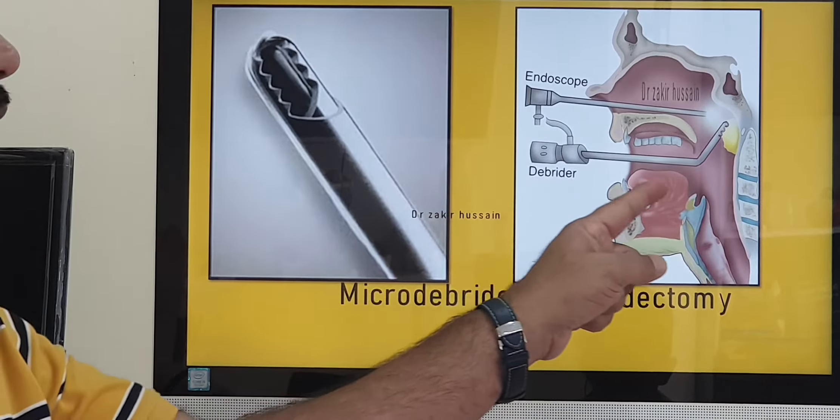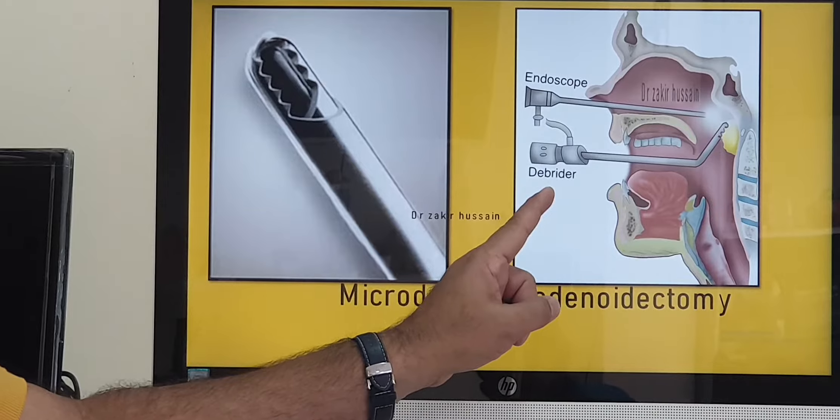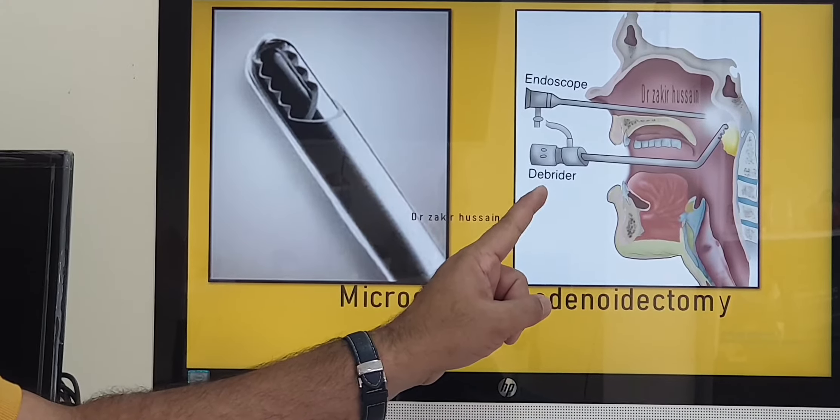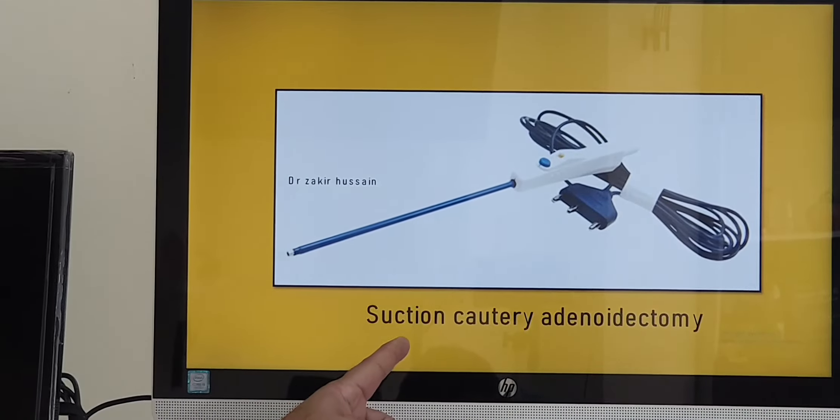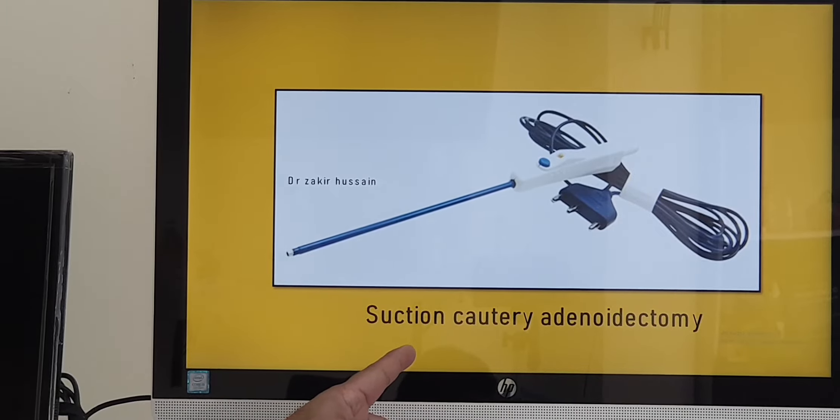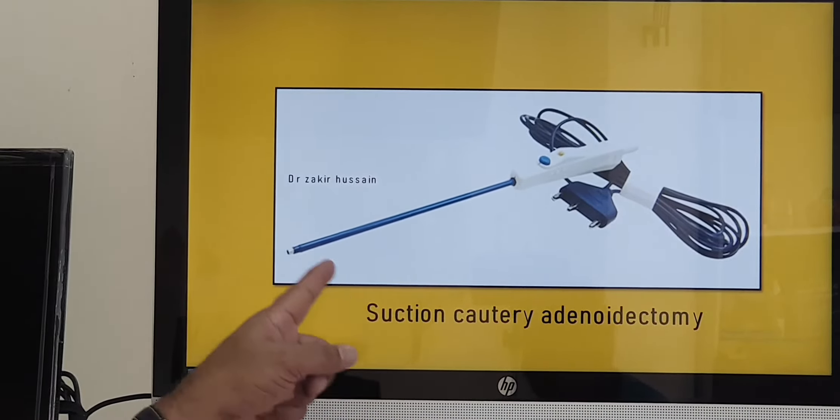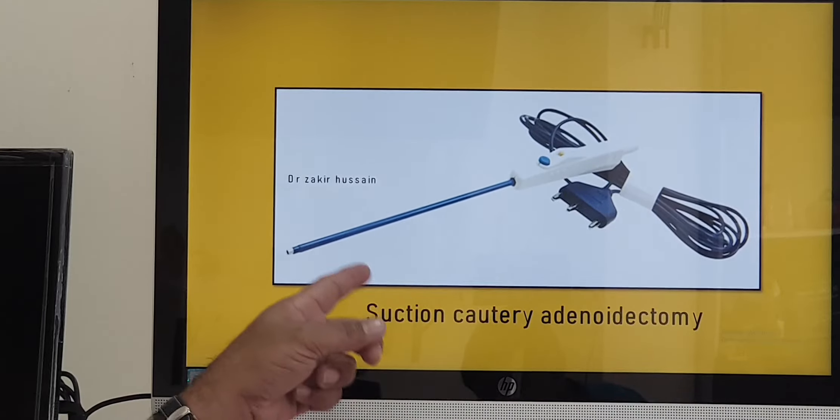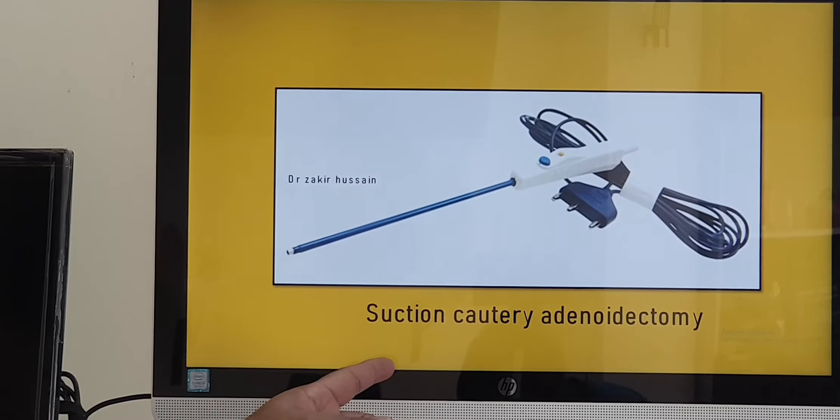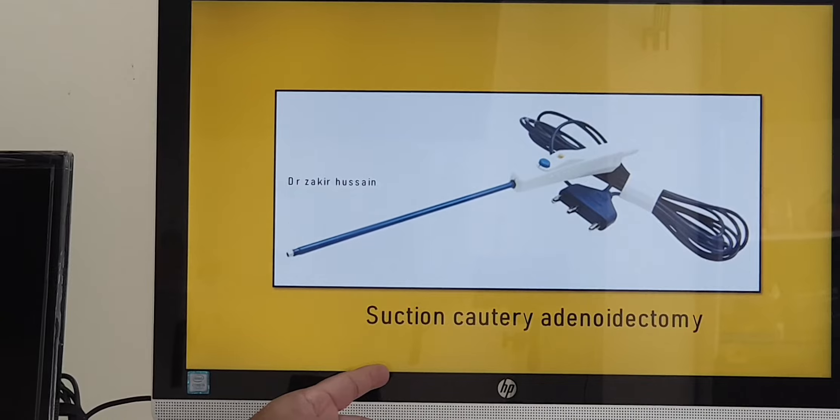Third technique: the system, everything is the same, except for the microdebrider we replace this with a suction diathermy or suction cautery, which has got dual action. It sucks the blood away and it cauterizes the area too. With this also adenoidectomy can be done. It's called suction diathermy adenoidectomy.